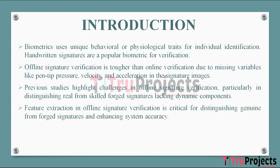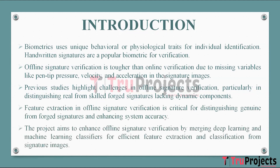Feature extraction is a crucial step in offline signature verification. It involves identifying relevant patterns and characteristics from signature images that aid in distinguishing genuine signatures from forgeries. Effective feature extraction greatly influences the accuracy of the verification system. The project's objective is to improve offline signature verification by utilizing a hybrid approach that integrates both deep learning and machine learning classifiers to enhance feature extraction and classification from signature images.